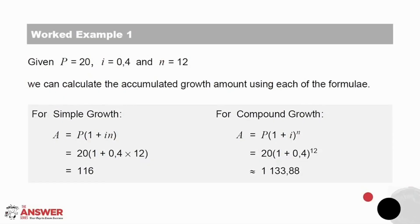Let's have a look at this worked example, which provides a great illustration of the difference between the two types of growth. It is also a great opportunity to check your substitution skills. Take the information given, P equals 20, I equals 0.4, and N equals 12, and substitute in each case into P, I, and N. Through calculations, the answer for the simple increase is 116, and for compound increase is 1133.88. Note here the curly equals sign, which indicates that this answer is rounded off. These answers differ greatly and clearly illustrate the difference in the impact of growth of the two formulae.